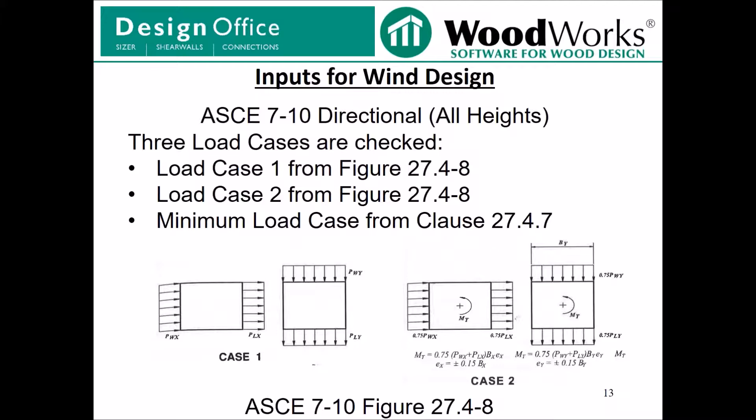For the directional all heights method, Shearwalls completes checks for three design cases. Load case 1 from figure 27.4-8 applies the windward and leeward loads to one direction of the structure at a time. The software also checks load case 2 from figure 27.4-8, which reduces the total load from case 1 by 25% and applies an eccentricity. Case 2 is only applicable to structures three stories and taller. Finally, Shearwalls also generates loads based on the minimum load case described in clause 27.4.7.